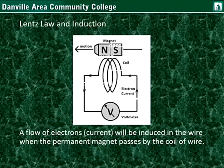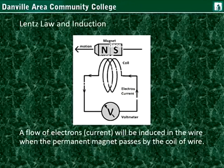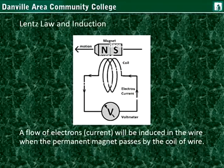Also, the faster the magnet moves by the coil, the closer it is to the coil, and the greater the length of the coil concentrated in a small area, the greater the electron current. No electrons are actually jumping from the magnet into the coil. Rather, the electrons that are already in the coil and within the wire are being coerced by this changing magnetic field.